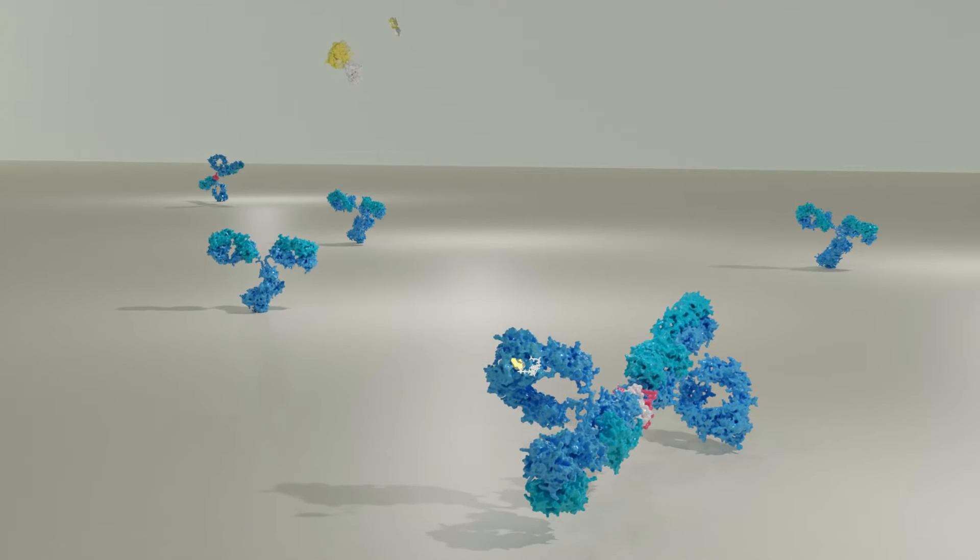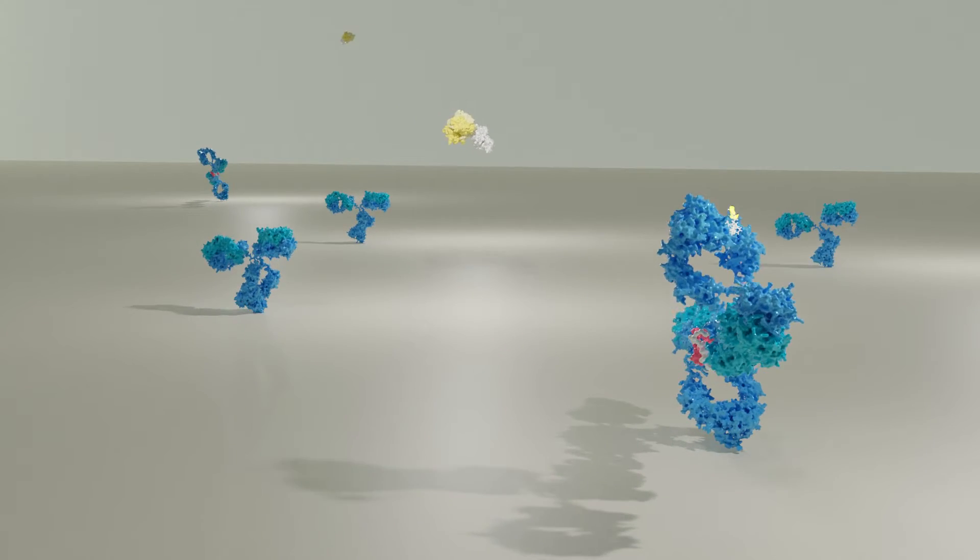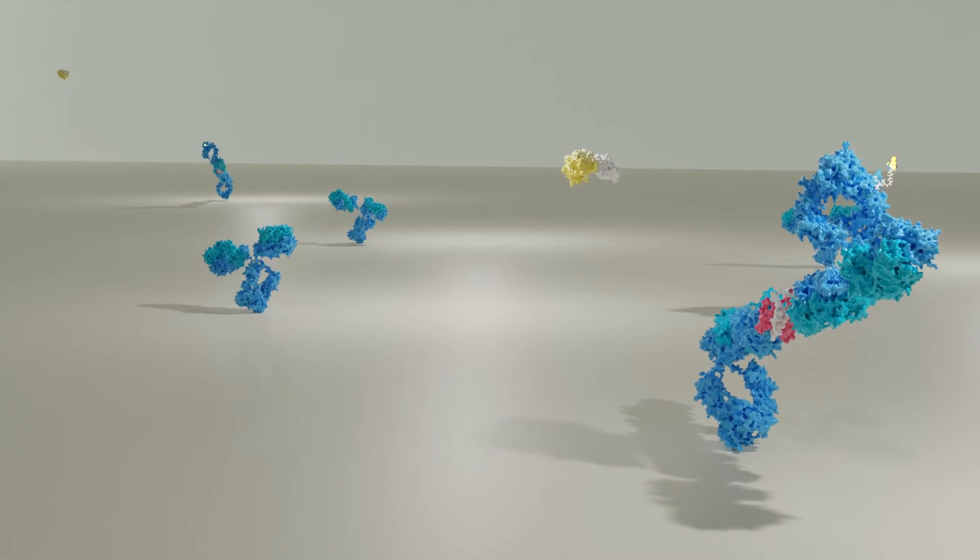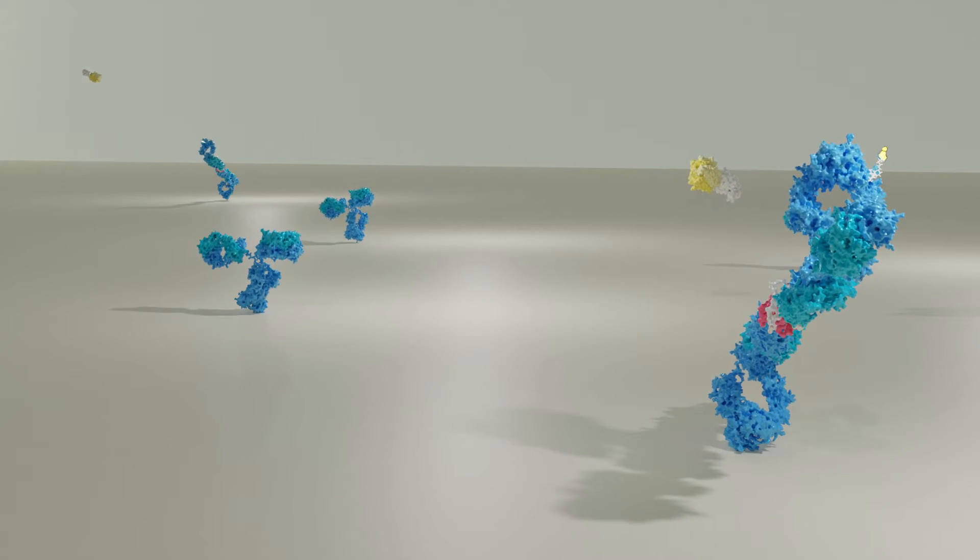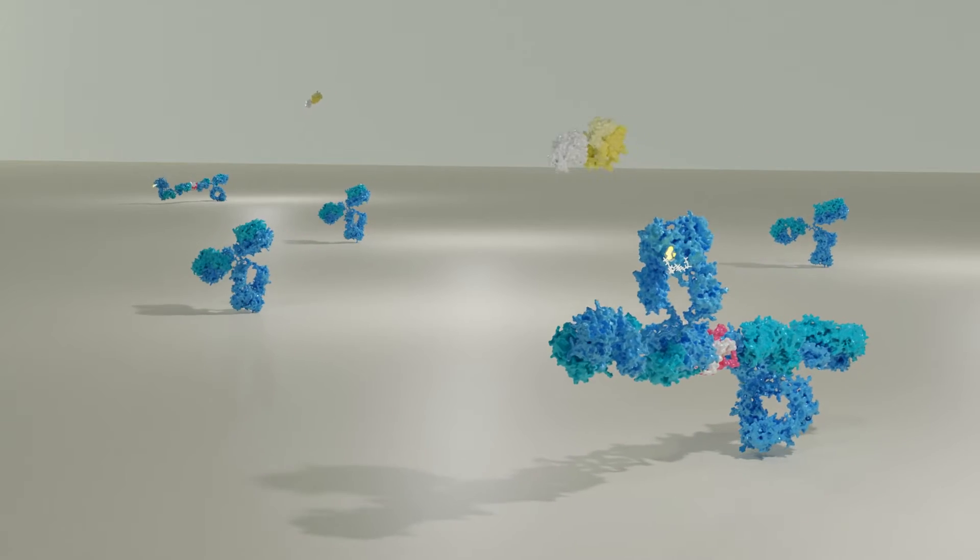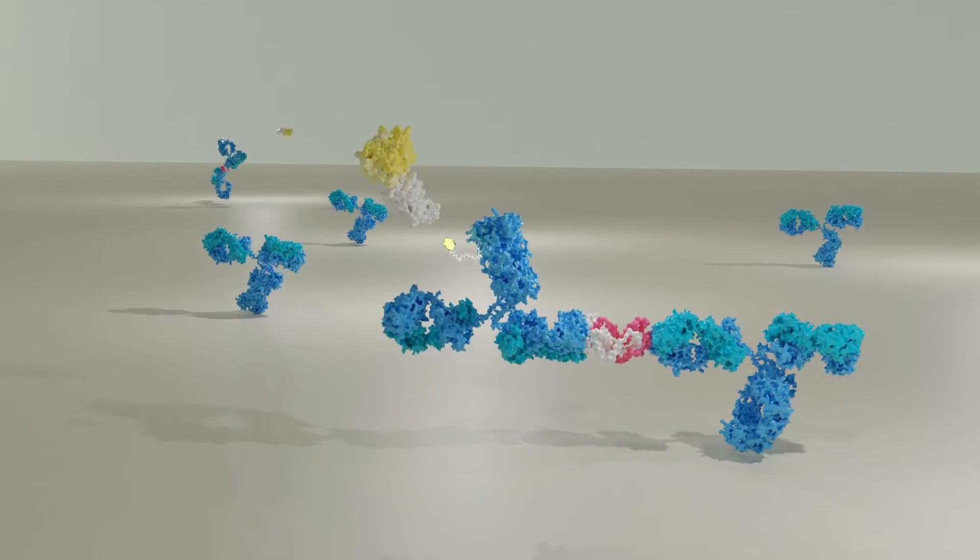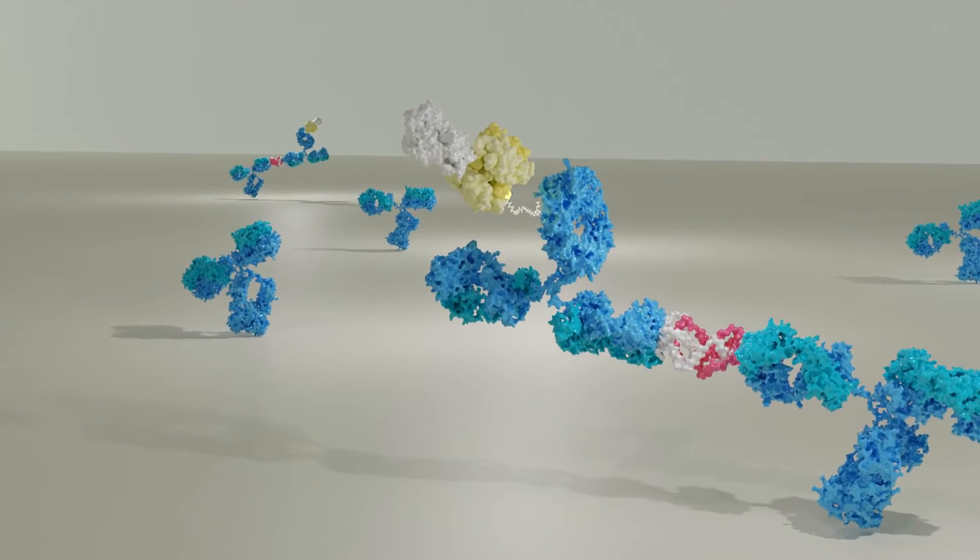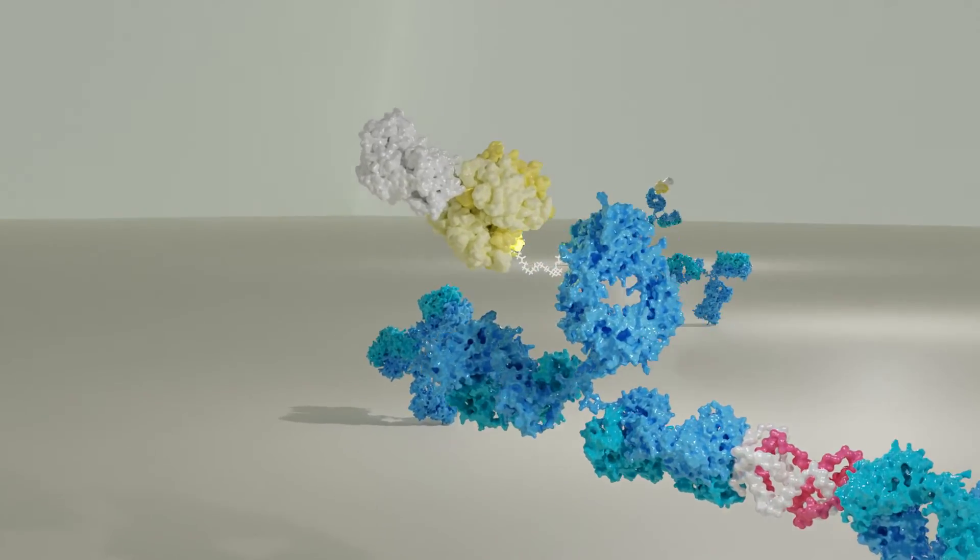After washing, we add streptavidin linked to horse radish peroxidase. Streptavidin will bind biotin, and in this way the enzyme horse radish peroxidase will be present bound to the well in an amount that is proportional to the amount of gamma interferon present in the sample.